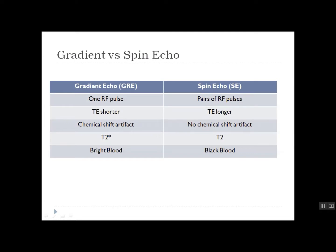The main differences between gradient echo and spin echo can be seen in this table. A spin echo is produced by pairs of RF pulses, but a gradient echo is produced by a single RF pulse with a gradient reversal. Since only one RF pulse is applied, the echo can be recorded much more quickly in a gradient echo sequence, so TE is generally shorter for gradient echo than for spin echo. In gradient echo imaging, the gradient reversal refocuses only those spins dephased by the gradient itself, so phase shifts from magnetic field inhomogeneities, static tissue susceptibility gradients, or chemical shifts are not canceled at the center of the gradient echo as they are in spin echo sequences. Image contrast is dictated not by the true T2 relaxation but by T2-star in gradient echo. As a result, gradient echo sequences are more frequently troubled by susceptibility and chemical shift artifacts.